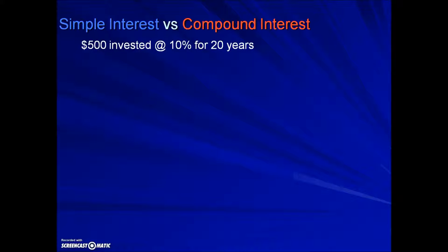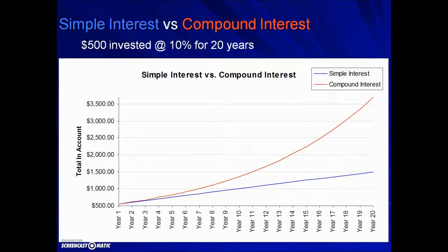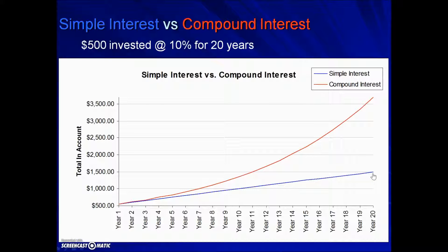On the next screen there's a graph showing five hundred dollars invested at ten percent for twenty years. It's the time factor that really puts compound interest way ahead of simple interest. Simple interest is shown in blue — slow and steady — where the same interest calculation on that five-hundred-dollar principal year after year results in the five hundred dollars growing to fifteen hundred dollars over twenty years. The red graph shows compound interest in the same scenario: five hundred dollars at ten percent for twenty years.